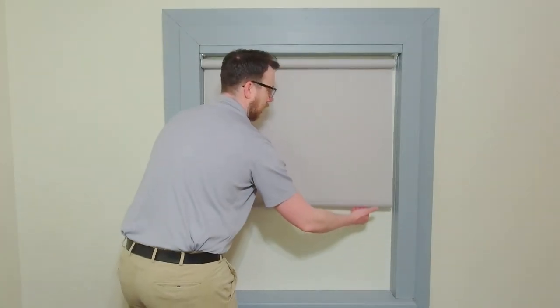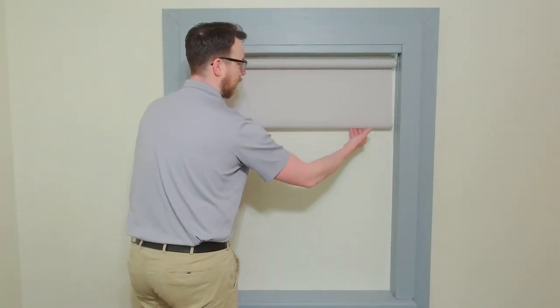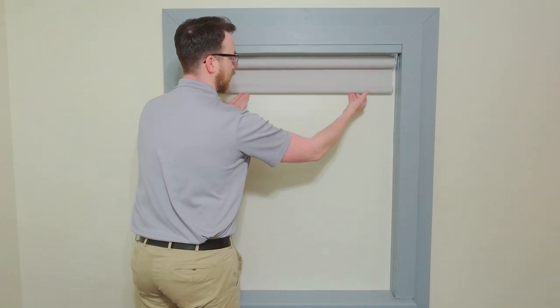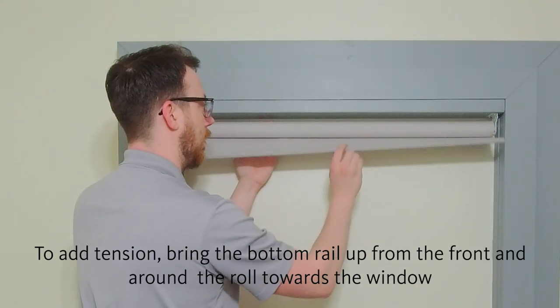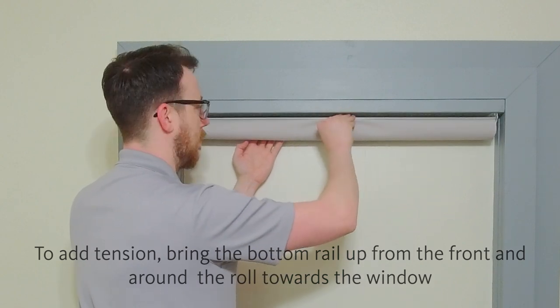If while raising your shade, the fabric bunches up and it cannot reach the upper limit, the lift doesn't have enough tension. To add tension, bring the bottom rail up from the front and around the roll towards the window.